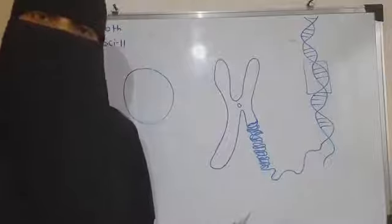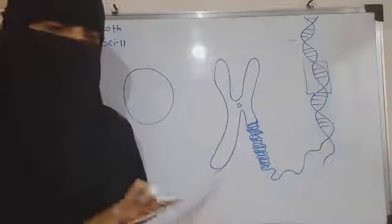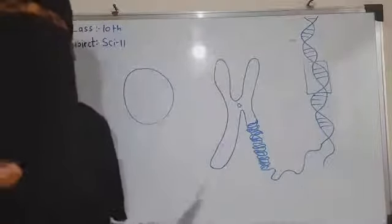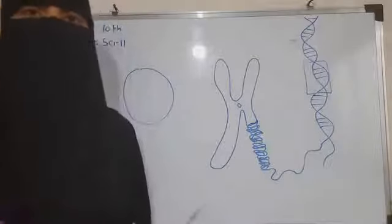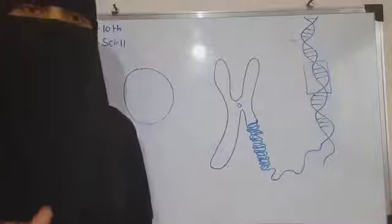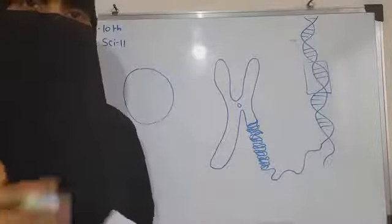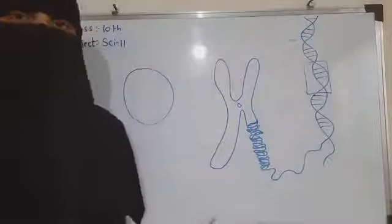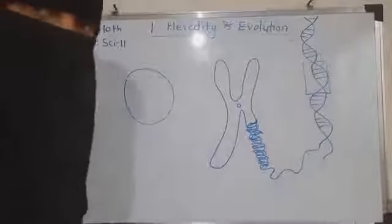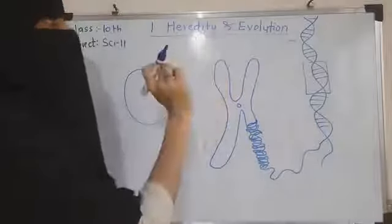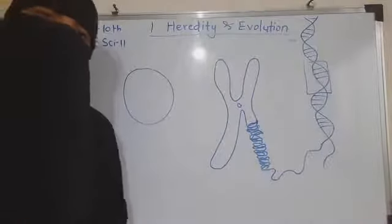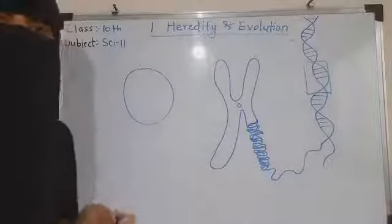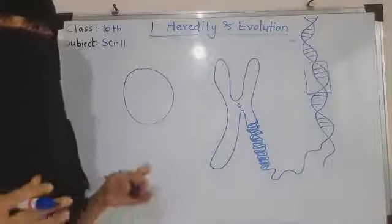We are going to start with lesson number one. The first three chapters — Heredity and Evolution, Life Processes Part 1 and Part 2 — are all very important. If you have understood all the basic concepts from 9th standard, it will be easy. Otherwise, we are going to revise a few concepts wherever necessary. So let's start today with Chapter 1: Heredity and Evolution.